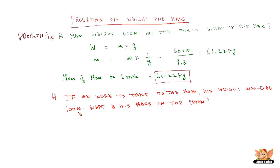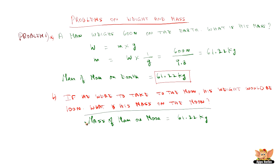When his weight is 100 Newton on the moon, what is his mass on the moon? We know the relation between weight on the moon and on the earth — the weight changes, but mass is a physical quantity contained in an object, so mass does not change. Hence mass of the same man on the moon is also 61.22 kg.